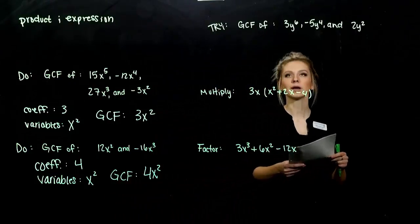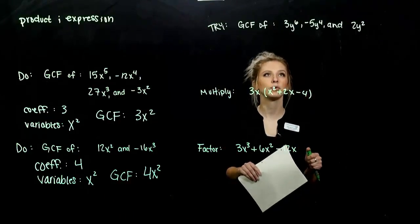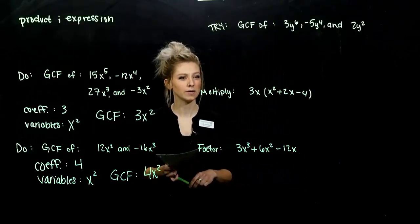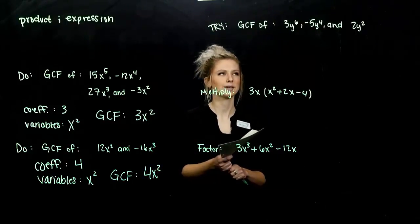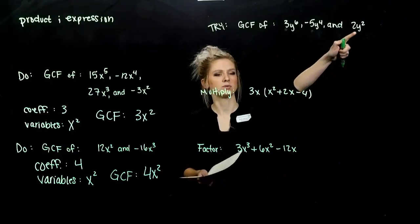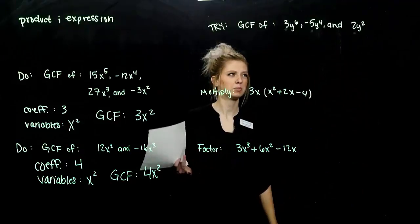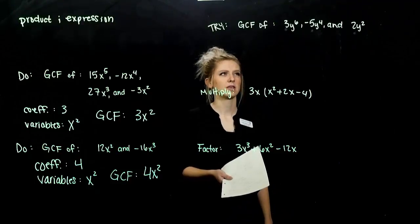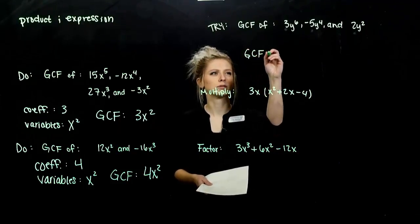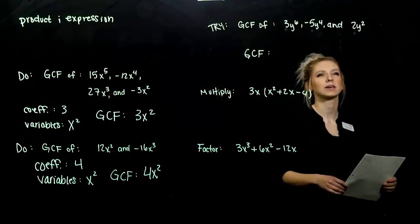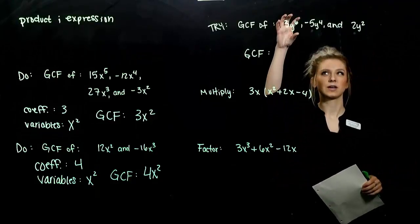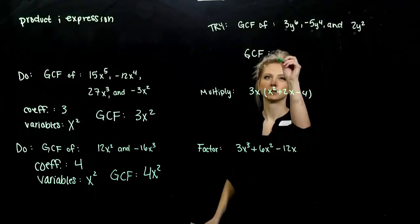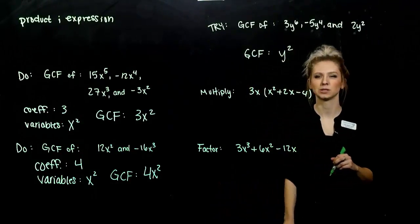Go ahead and take this next one: find the greatest common factor of 3y to the 6th, negative 5y to the 4th, and 2y squared. For the coefficients — 3, 5, and 2 are all prime — the only thing we can take out common between all of them is 1, but that won't change anything. For the variables, the largest factor of y we can take out of every single term: I've got 6, 4, and 2, so the greatest they share in common is 2. The greatest common factor of those three terms is y squared.